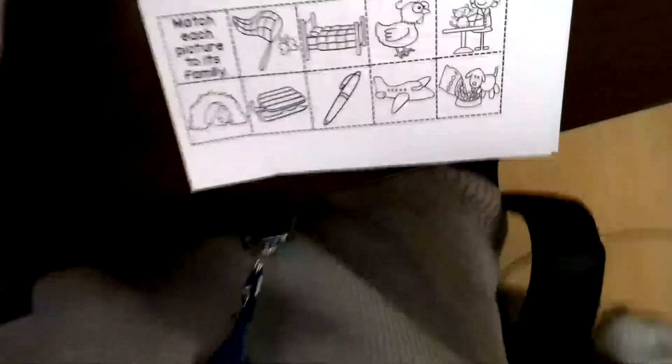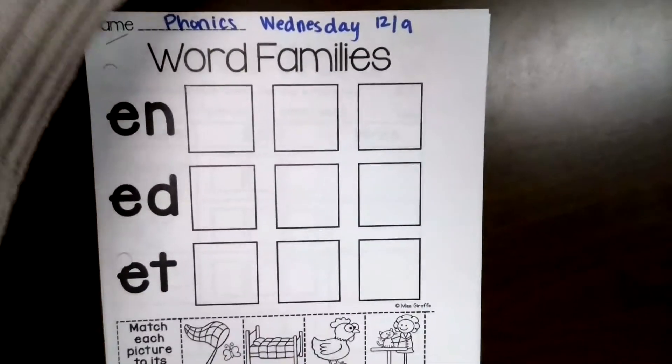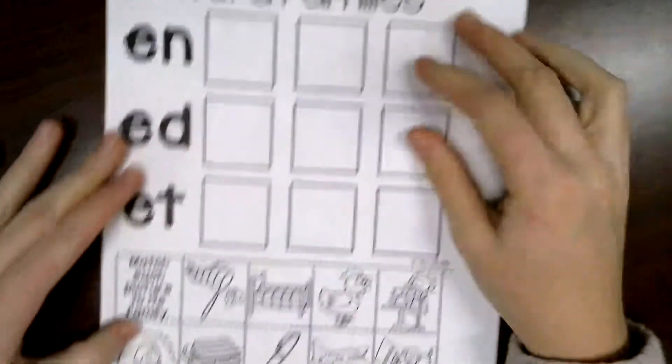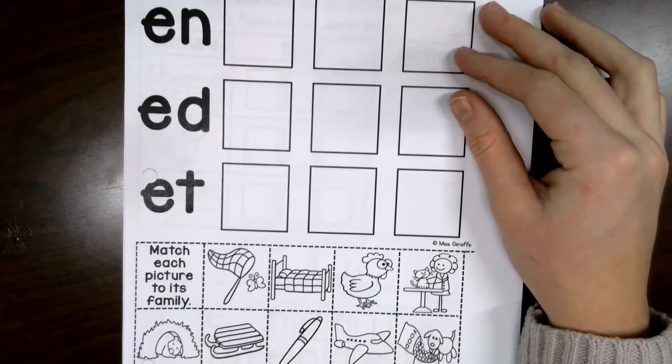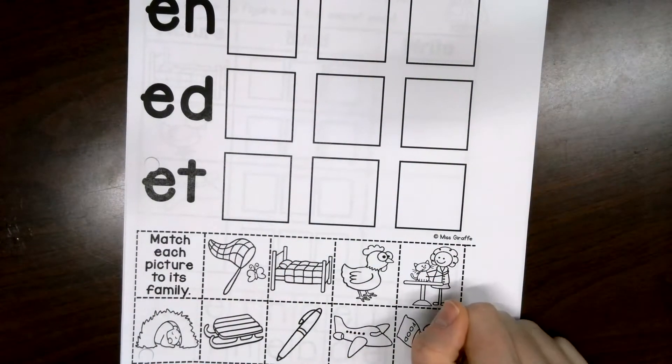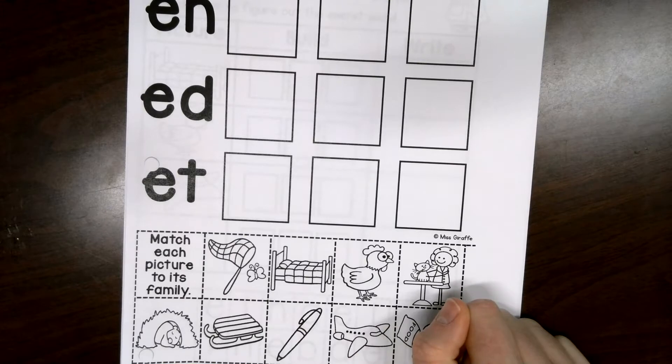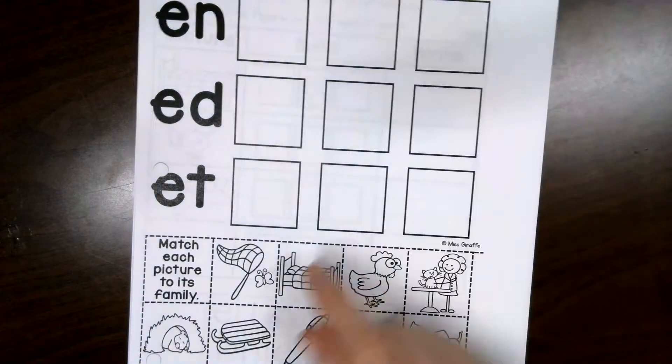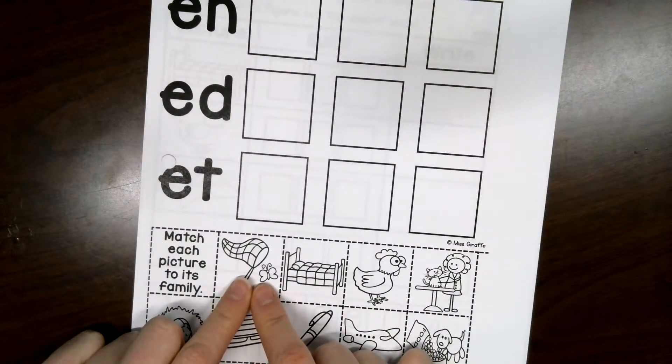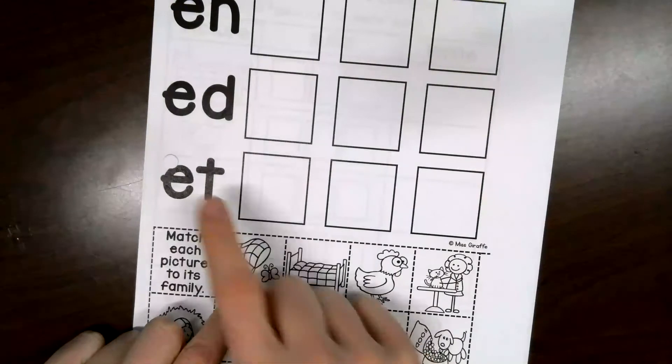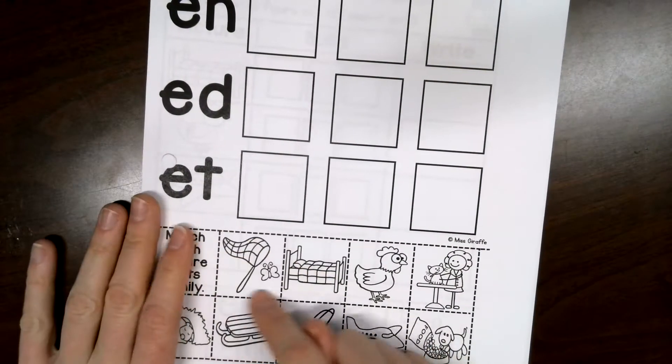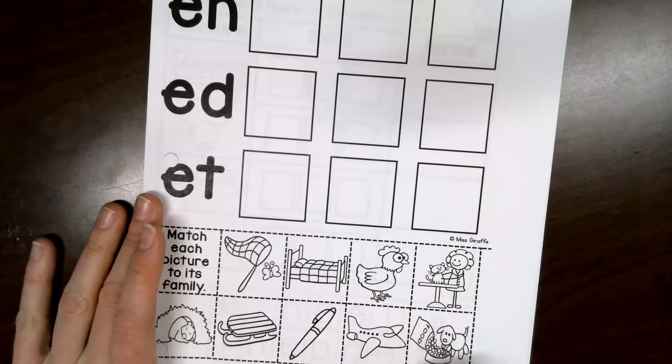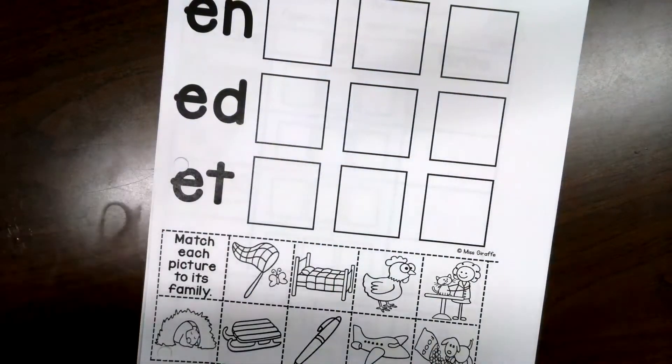So, pause the video. Write your letter E seven times, and then write a word that has the letter E in it. When you're done doing that, you can get your phonics page ready. I'm going to try and get to see a little bit more. There we go. So, it says Wednesday, 12-9, if that is today. And then we have this sort. So, on the bottom, there's a bunch of pictures. And then we have our words that end with E-N, E-D, and E-T. So, if I look at this first one, it is a net. N-e-t-t-t. I'm hearing that T sound there. So, I would cut out this picture and put it right here. So, you're going to go through and do all of these and put them in the correct spot.